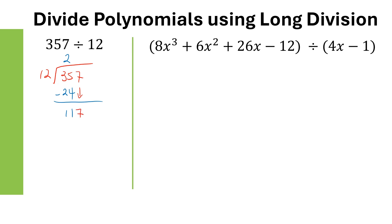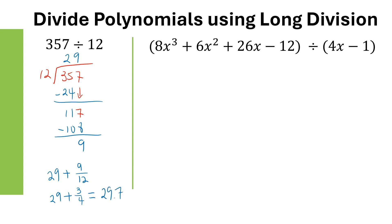117 divided by 12 is 9 point something, so 12 can go into 117 nine times. Multiply: 9 times 12 is 108, then subtract, giving a remainder of 9. So the final answer for 357 divided by 12 is 29 with remainder 9 out of 12, and since 9/12 equals 3/4, this is equivalent to 29.75.